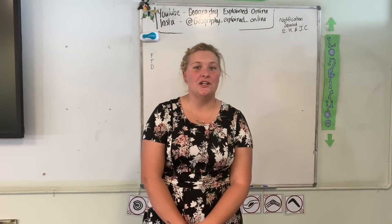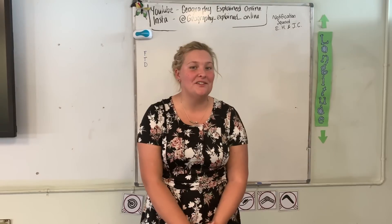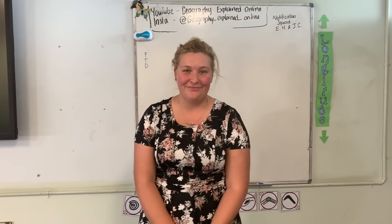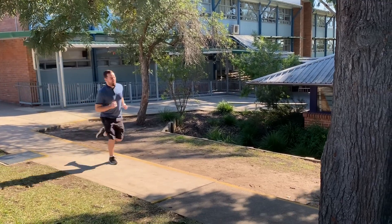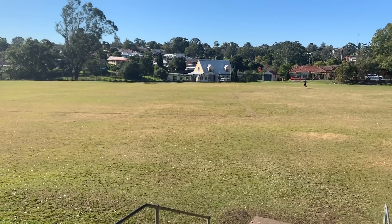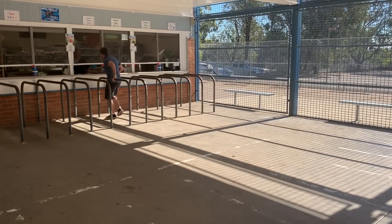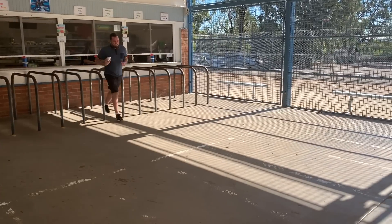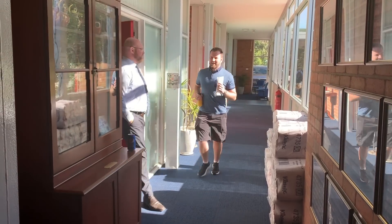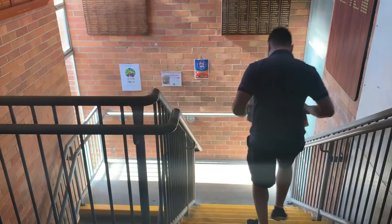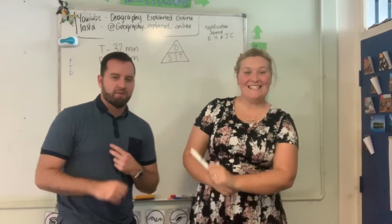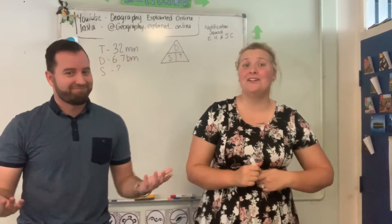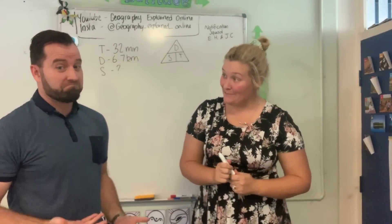We're going to give you a practical example now. We've set up Mr. Cizio to go for a bit of a jog — he's going to do a couple of laps around the school. We've measured it out to 6.7 kilometres and we're going to see how quickly he can get it done. Cizio's back in one piece, managed not to dislocate anything, and he ran 6.7 kilometres in 32 minutes — which is pretty fast, pretty speedy.